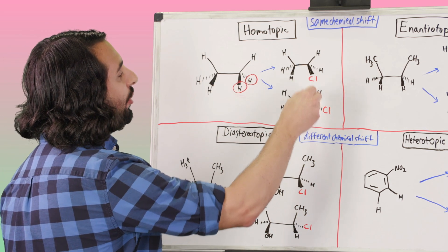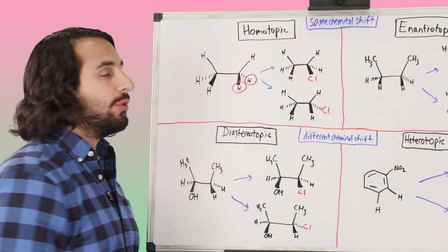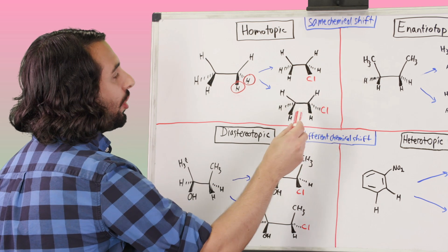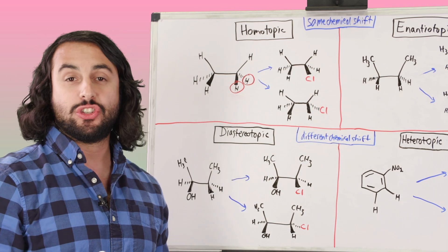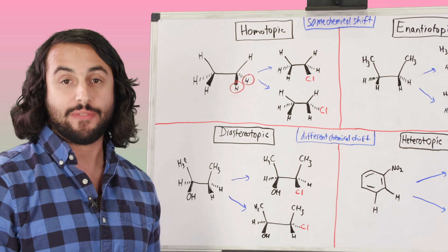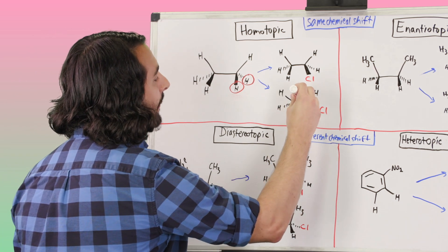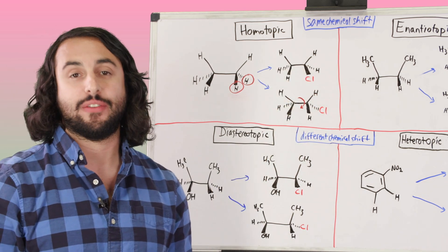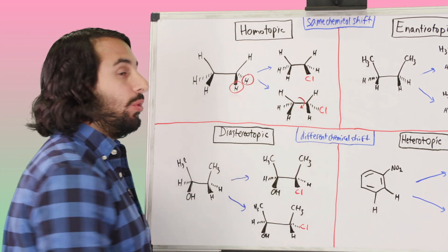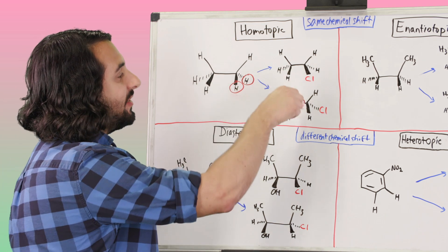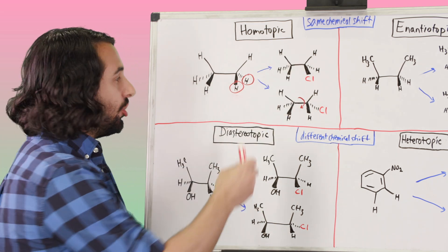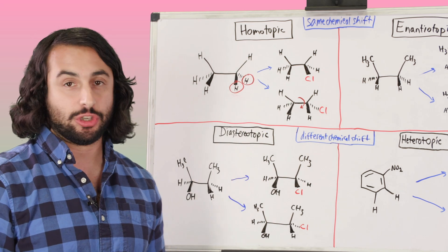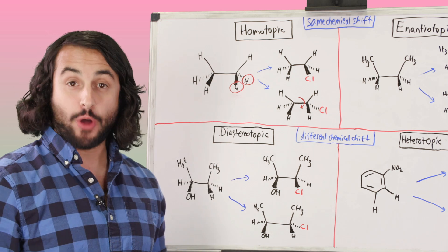For one molecule we'll take the hydrogen on the wedge and turn it into a chlorine, and for the other molecule we'll take the hydrogen on the dash and turn that into a chlorine. Now we examine the relationship between these two molecules. This carbon, even with the chlorines there, is not a chiral center because there are two identical hydrogens. These are actually just different conformations of the same molecule — we could rotate this sigma bond to go from one conformation to the other. So because we end up with the same molecule, the relationship between these two protons is homotopic.